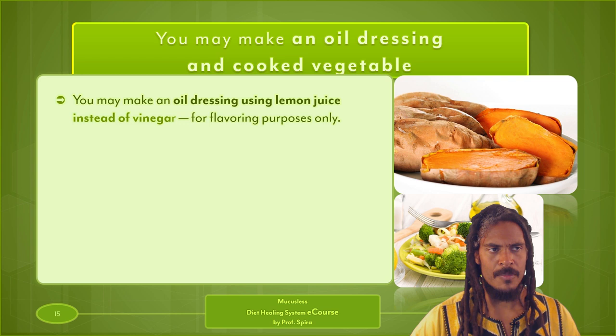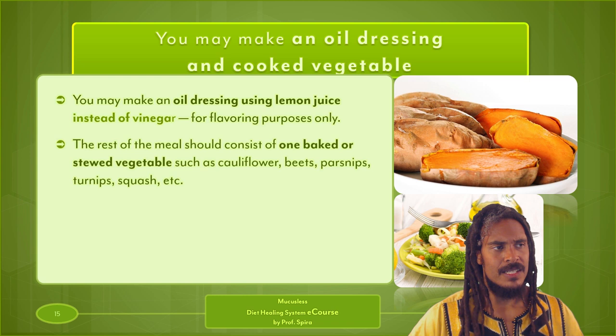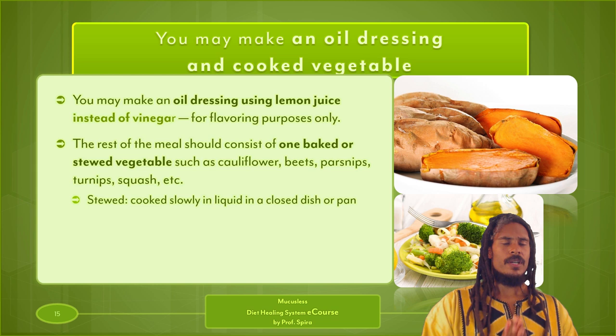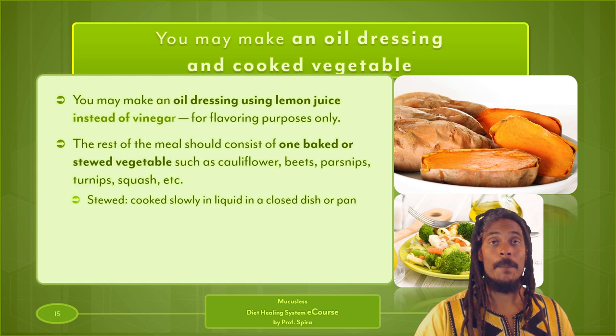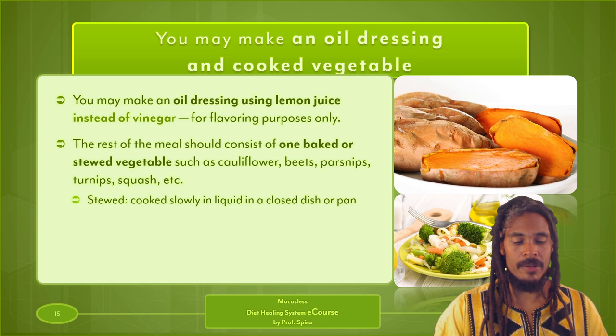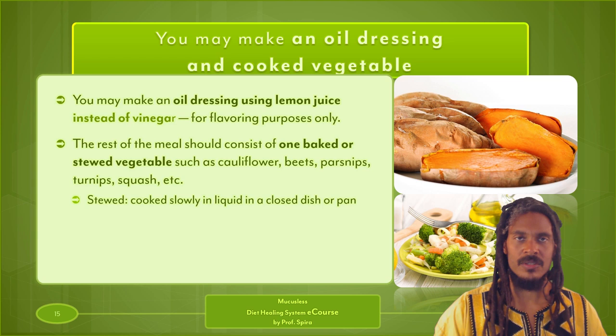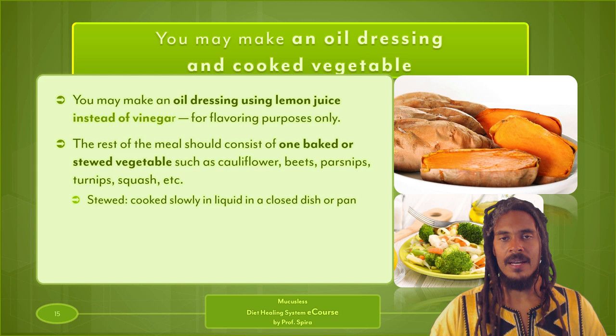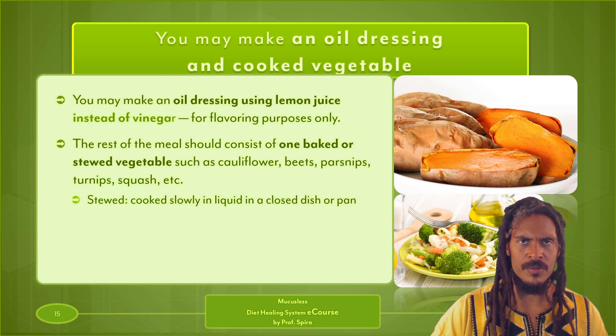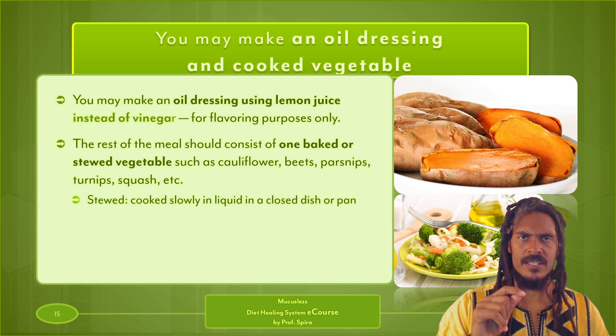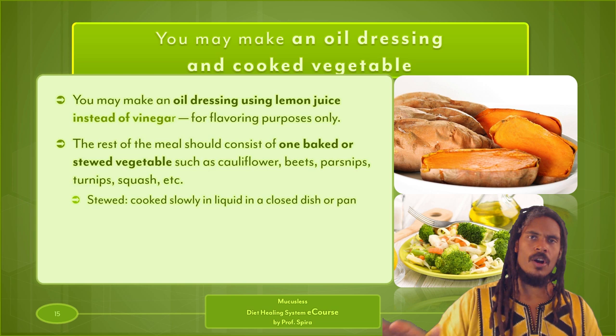The rest of the meal should consist of one baked or stewed vegetable — cauliflower, beets, parsnips, turnips, squash, etc. Stewed means cooked slowly in liquid in a closed dish or pan. You can steam the vegetables a little bit or stew them with a little water. We use an onion sauté quite a bit — steam the vegetables just enough to make them sufficiently soft, getting a little of the starch out without overdoing it, so they still eliminate and create that broom effect.